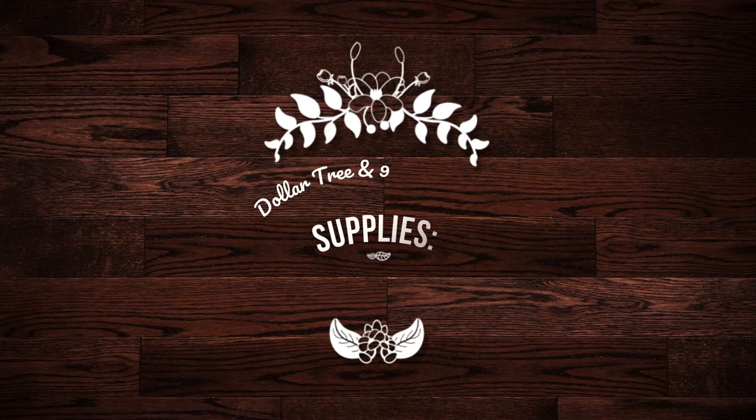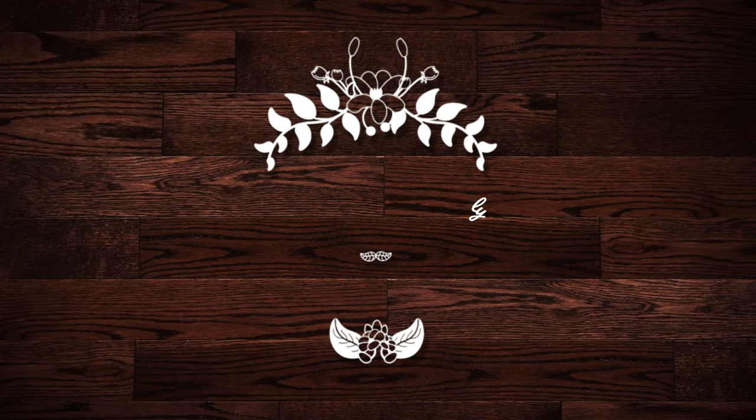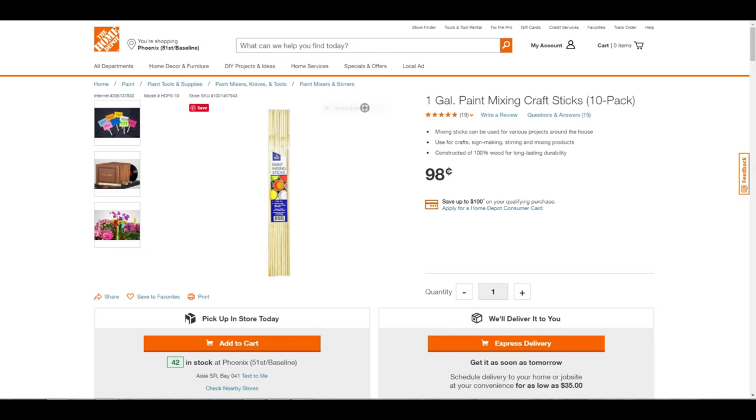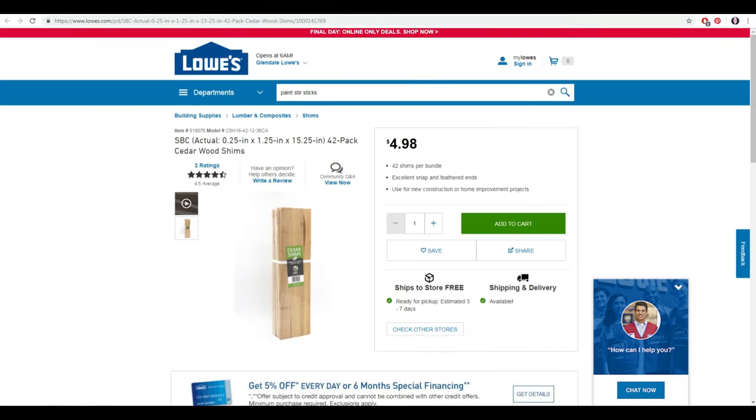I really love how this one looks on a Dollar Tree budget. Let's get started with which supplies you'll need. I found these wooden plant stakes at the 99-cent-only store for 99 cents a pack. Home Depot and Lowe's also carry packages of paint sticks for 99 cents, or you can find larger packs of wooden shims.